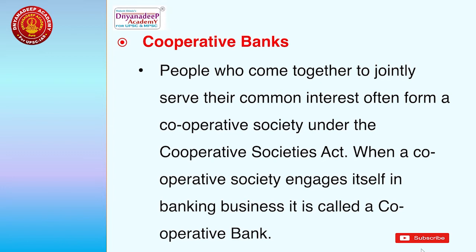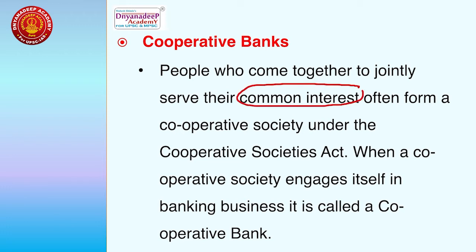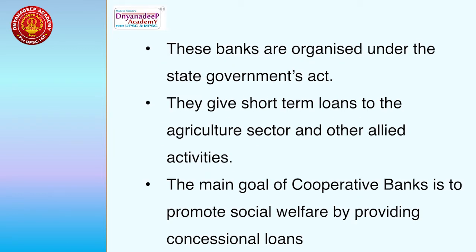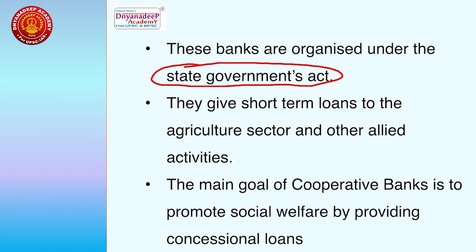A cooperative bank is formed when certain people come together jointly to serve their common interest, forming a cooperative society under the Cooperative Societies Act. When a cooperative society engages in banking business, it is called a cooperative bank. These cooperative banks are organized under state government acts — for example, Maharashtra's cooperative societies are organized under Maharashtra's Cooperative Societies Act.